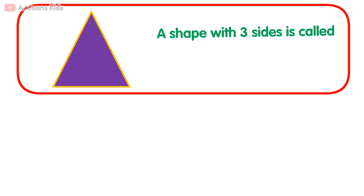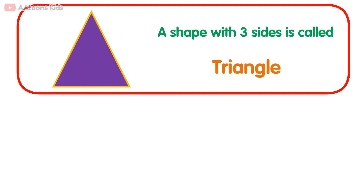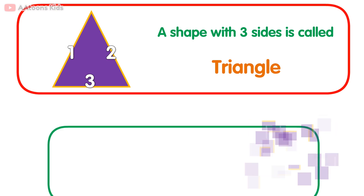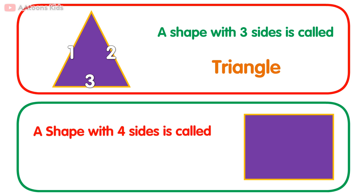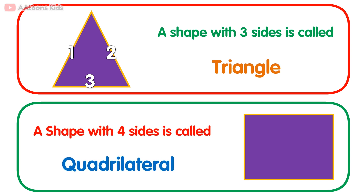A shape with three sides is called a triangle: one, two, three. A shape with four sides is called a quadrilateral: one, two, three, four.